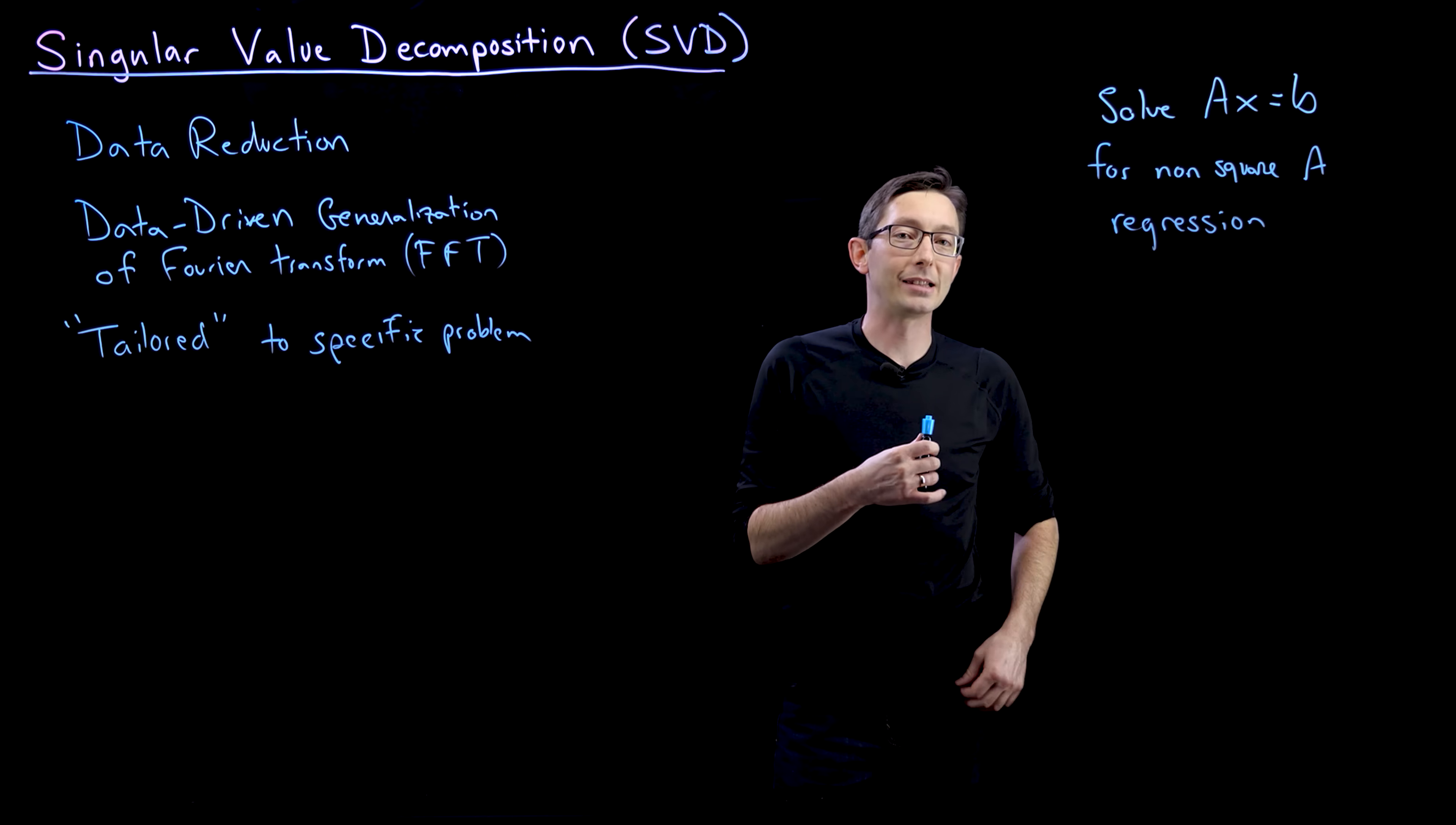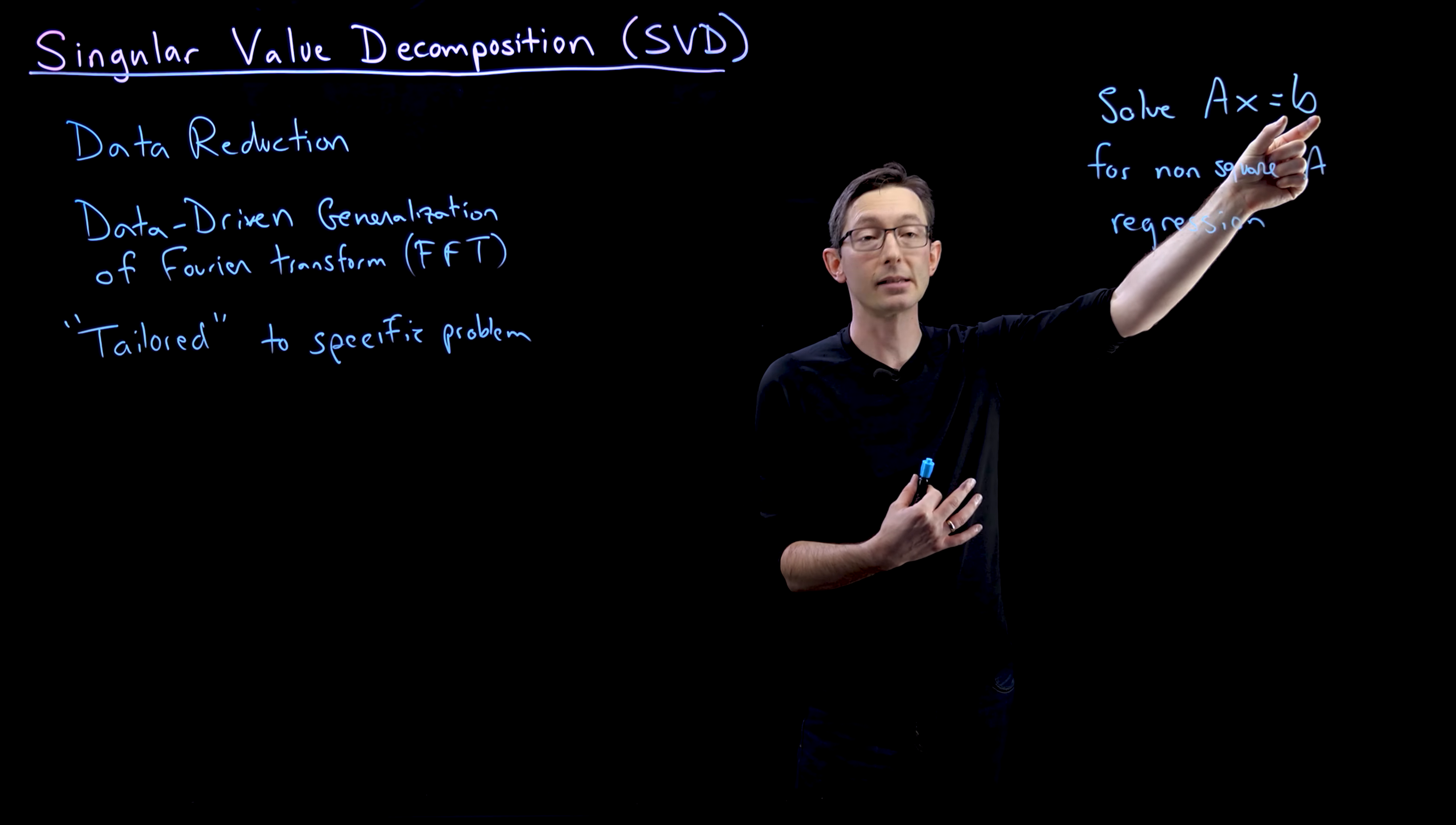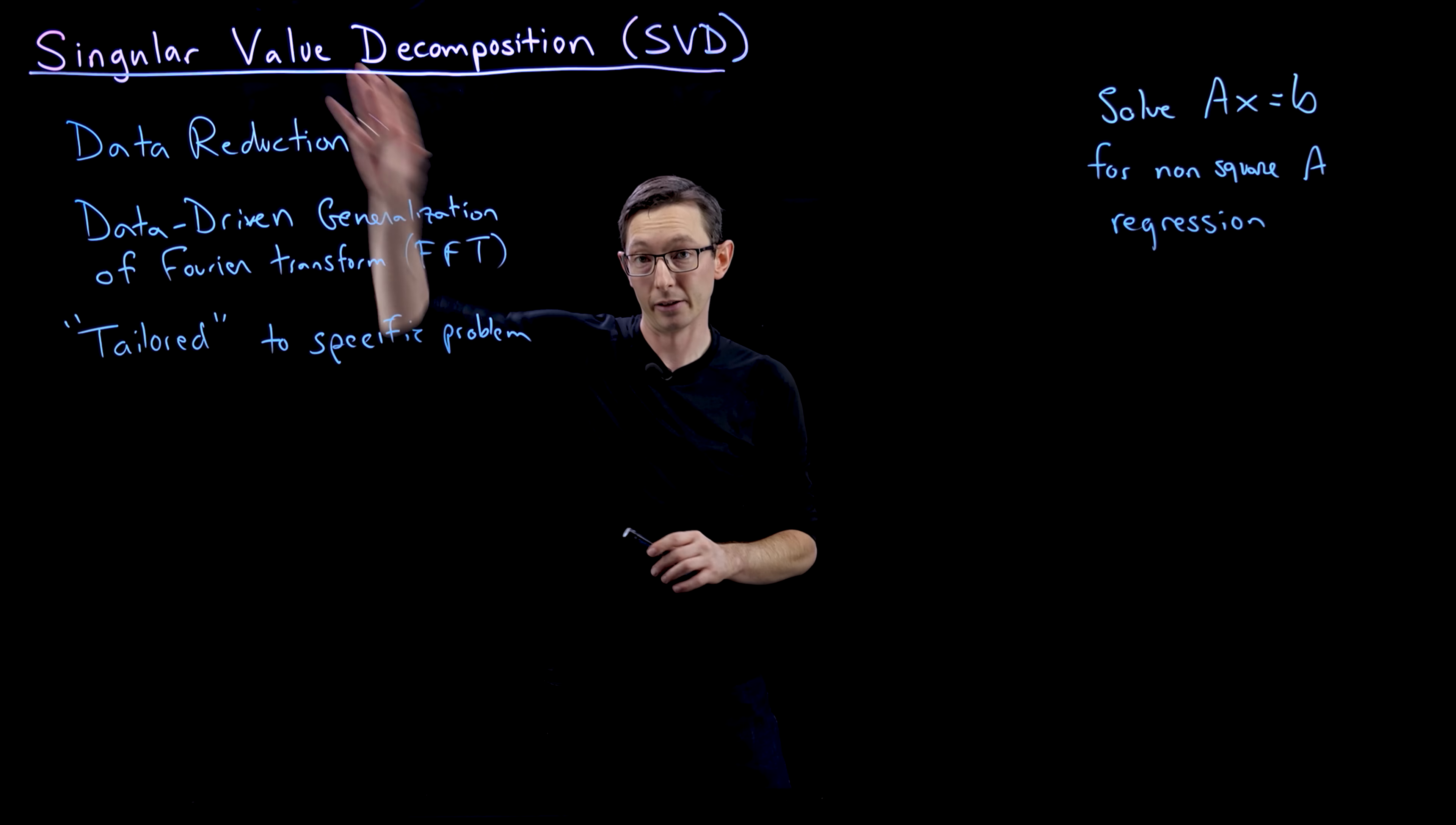And we're going to use this in particular for linear regression models and for many other things. So if I have data, let's say health data for a bunch of patients, and I want to build a model of how different risk factors map to some disease, I can build the best fit model X given data A and B using least squares linear regression. Again, built on the singular value decomposition.